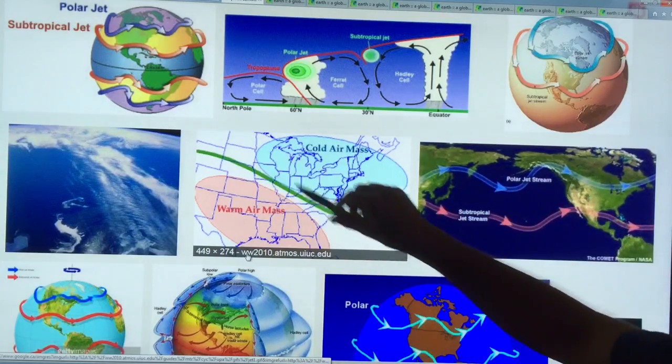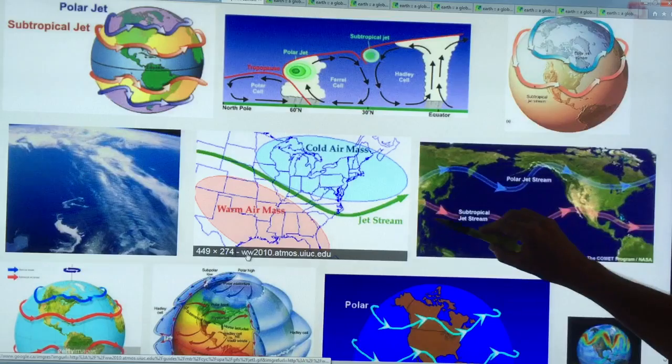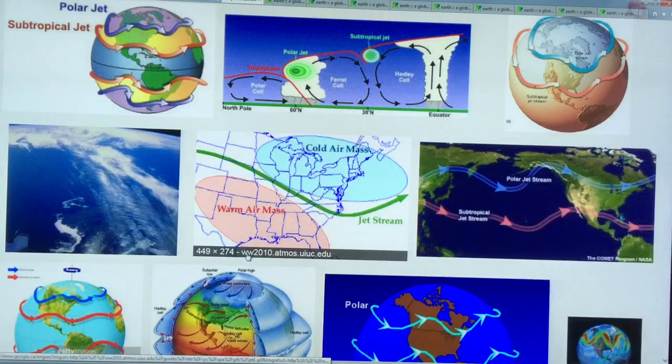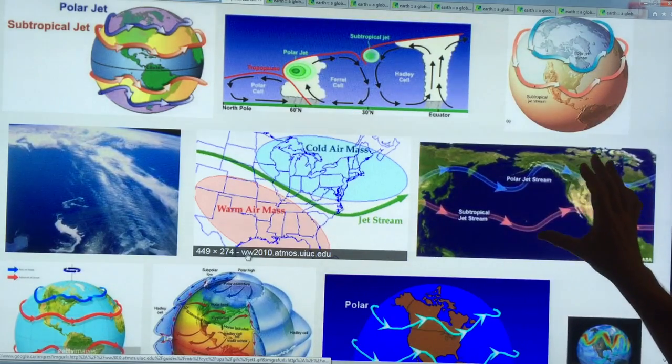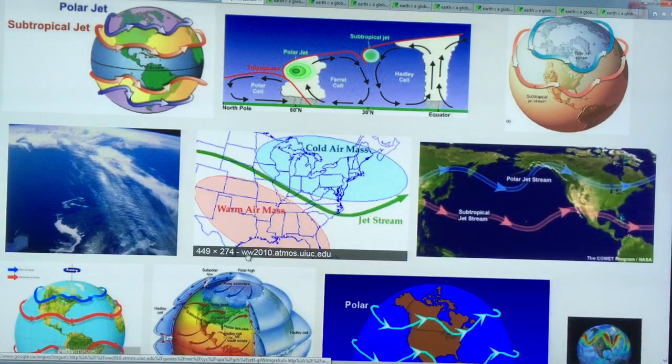Think of the jet streams as separating cold air from warm air. This is another view here, the subtropical jet, the polar jet. This is the idealized view. What we're seeing is a fracturing of the jet stream. In reality, it doesn't look too much like this, and I'll demonstrate how.